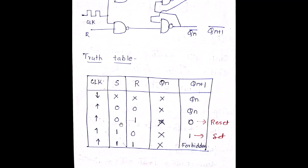If the clock is high and S=0, R=1, irrespective of QN, my output will always be 0 — that is the reset condition. If my clock is high and S=1, R=0, irrespective of QN, my QN+1 is always going to be set. And if my clock is high and S=1, R=1, irrespective of QN, my output will always be in forbidden condition. Forbidden means both QN+1 and QN+1-bar will be equal to 1, which is not possible — if QN+1 equals 1, its complement must equal 0.